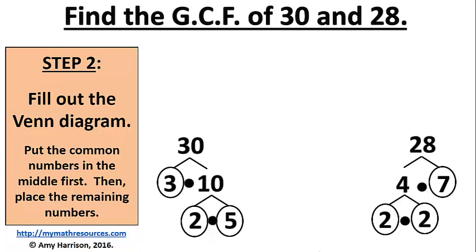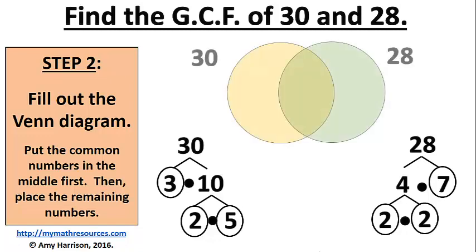Next, we need to fill out our Venn diagram. So first, let's draw a Venn diagram and label it 30 and 28. Next, we need to look at the prime factorization of 30 and the prime factorization of 28 to see which prime factors they have in common.